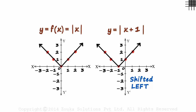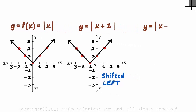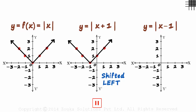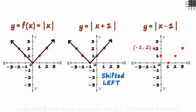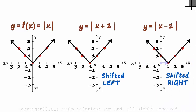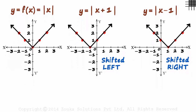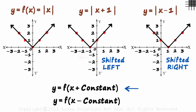And what if we subtract a constant from the input? Try drawing the graph for this function. When the value of x is zero, then y will be the absolute value of minus one, which is one. When x is one, y will be zero. When x is two, then y will be one. Three comma two and minus one comma two would be a couple more points. Drawing the graph, we can see that it has shifted towards the right. Conclusion: if we add a positive constant to the input, the graph will move towards the left. And if we subtract a positive constant from the input, the graph will move towards the right.